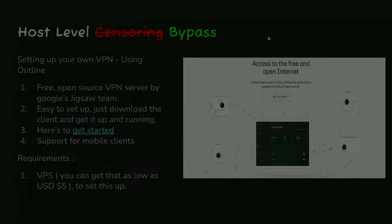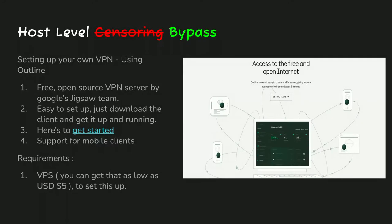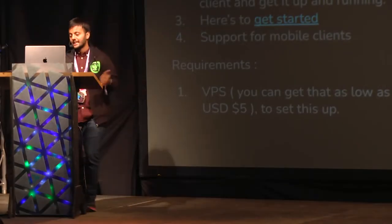A VPS is cheap — you can get one for as low as $5 per month, or you can use a commercial VPN. Setting up your own is a DIY approach. There's also a project by Google called Jigsaw and their tool called Outline — getoutline.org. You download the software, add the credentials of your DigitalOcean, Google Cloud, or Amazon VPS, and it sets up everything and gives you access. The good part is you don't have to do any SSH commands. They have mobile clients, Mac, and Linux clients, so you can access it from any device.